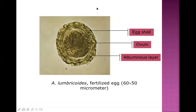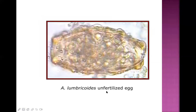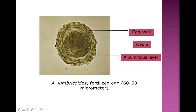Looking at this picture, this is how the egg of Ascaris lumbricoides appears. The fertilized egg has an egg shell on the outside, an ovum at the center, and an albuminous layer in between. The unfertilized egg of Ascaris lumbricoides is more elongated with two slight opening-like structures at the end. The rounded one is the fertilized egg.